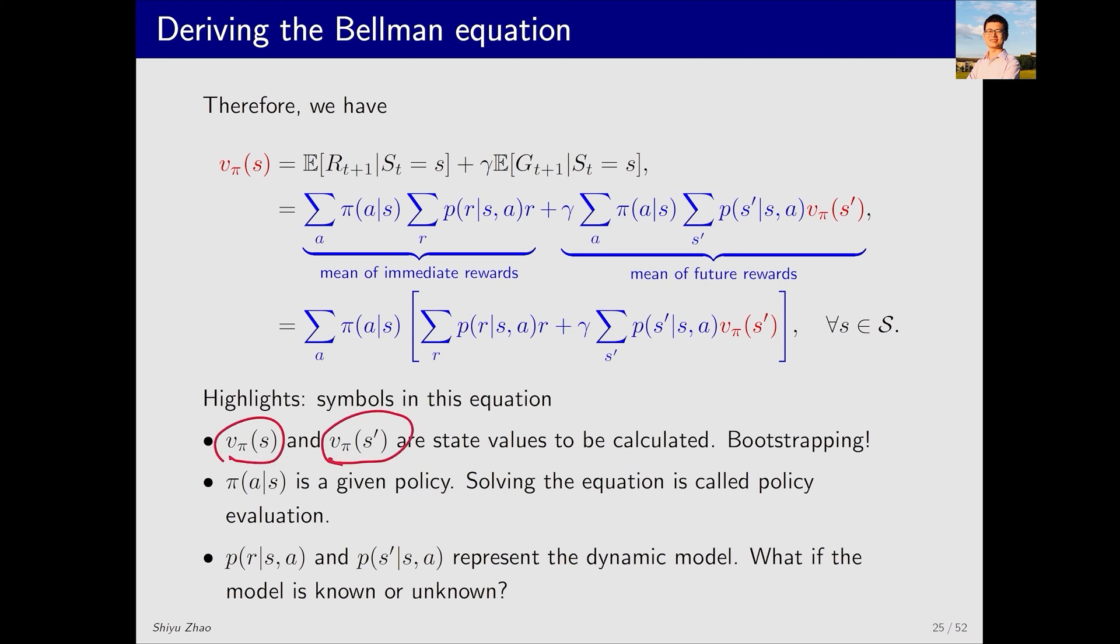Furthermore, these two are the state values to be calculated. But how to calculate? Bootstrapping. Intuitively, it may seem challenging to compute this state value since it relies on the state values of others, but in fact we have a set of such equations that, when combined, can be solved. This equation relies on various probabilities. This is policy probability, making the Bellman equation rely on the policy. If we manage to calculate the state value, we are essentially performing policy evaluation, evaluating whether a policy is good or bad. The other two probabilities represent the dynamic model of the system. There are two possible scenarios. The first scenario is that we know the model. In this and the following lectures, we assume that we know the model, and will introduce algorithms based on this assumption. If we do not know the model, we can still calculate the state value, but this falls into the category of model-free reinforcement learning, which will be introduced in future lectures.